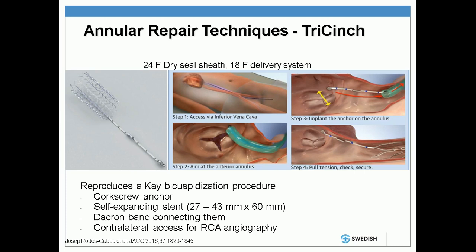This is the Tri-Cinch device. This can be placed through a 24-French GORE dry seal sheath with an 18-French delivery system. This is really reproducing a Kay bicuspidization procedure. There's a corkscrew anchor and a self-expanding stent that are placed through two separate devices that are connected by a Dacron band. This places the screw to pull the anterior portion of the annulus down towards the posterior, and then secures that in the inferior vena cava.